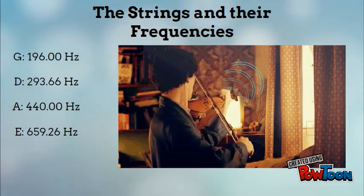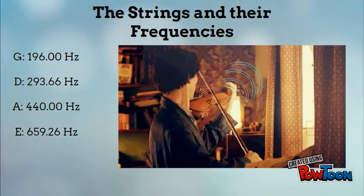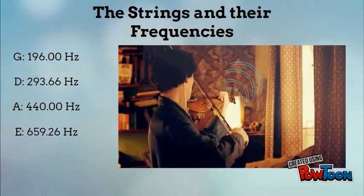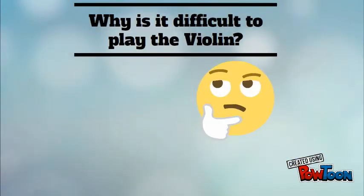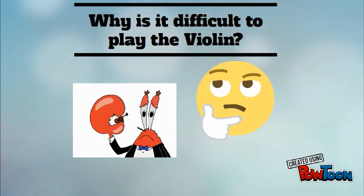G has 196 hertz, D has 293.66 hertz, A has 440 hertz, and E has 659.26 hertz. So why is it so difficult to play it in the first place?